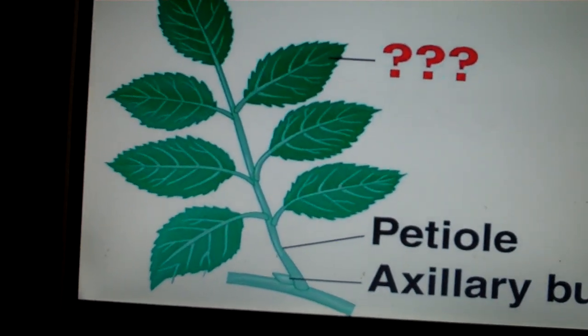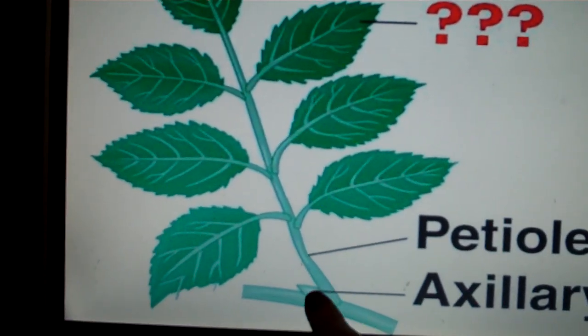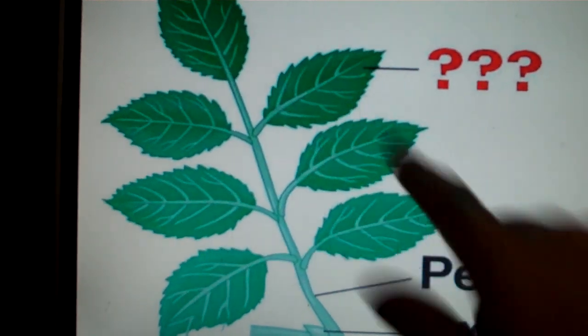So the petiole is there. We have the axillary bud. Now the question marks would be the leaflets.